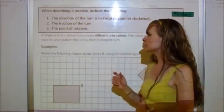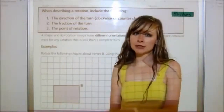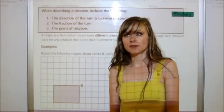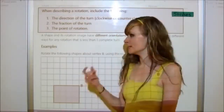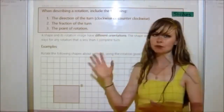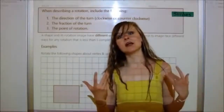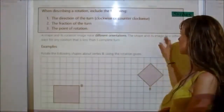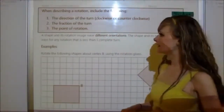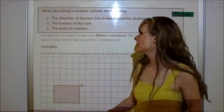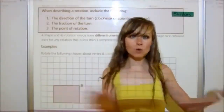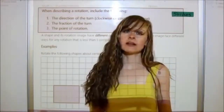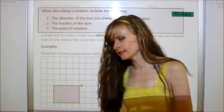A shape and its rotation image have different orientations. Remember the translation had the same orientation, and the reflection had the opposite orientation. For a rotation, we just say it has a different orientation because it depends on the rotation. The shape and its image face different ways for any rotation that is less than one complete turn. If it goes a whole turn, it's the same orientation.